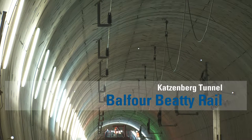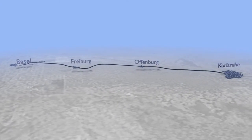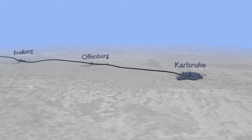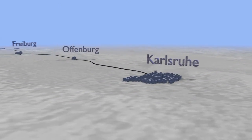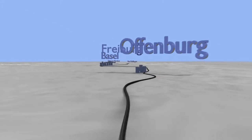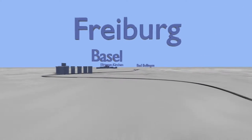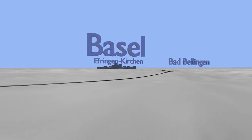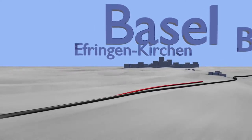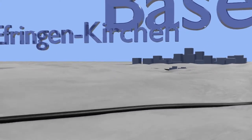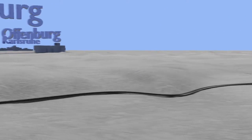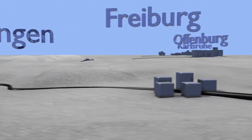The existing Rhine Valley Railway has reached the limits of its capacity and now has to be extended to four tracks. Between Bad Bellingen and Efringen-Kirchen is the 9.4 km long Katzenberg tunnel, which straightens out the line of the old Rhine Valley Railway. It leads through the outer region of the Markgräfler Land in the area known as Isteiner Klotz.